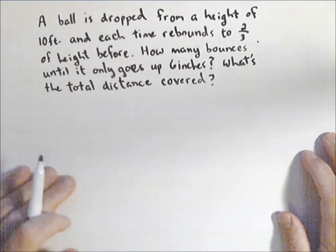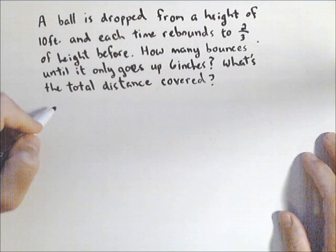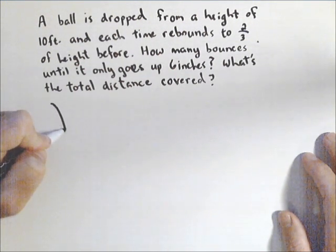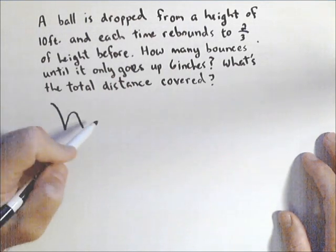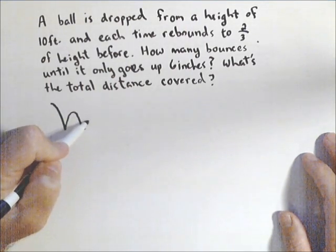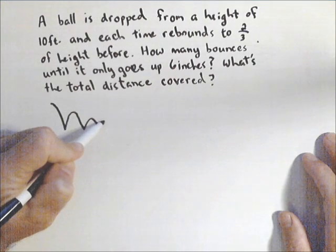So let's think about what happens. It gets dropped from 10 feet, then it bounces and it goes up only two-thirds of that, and goes back down, bounces two-thirds of that, so on and so forth.